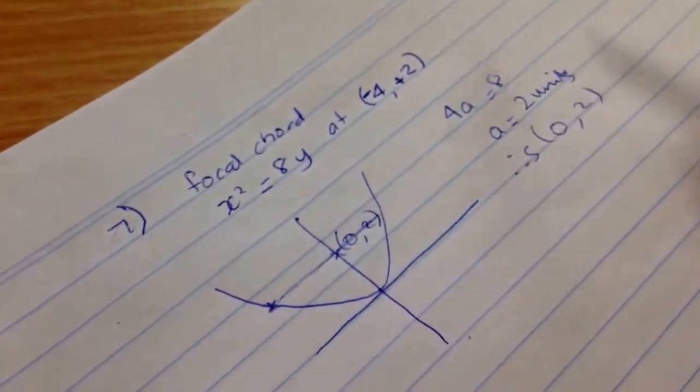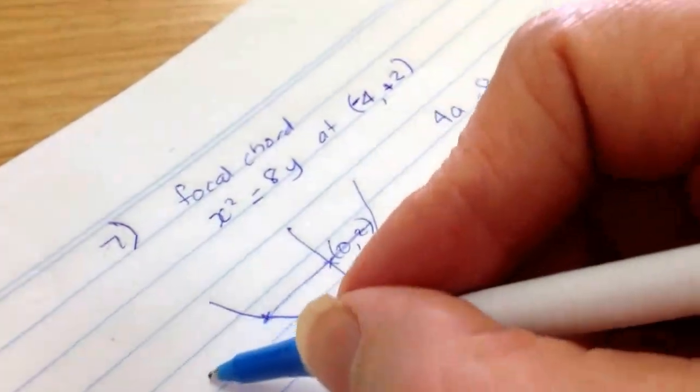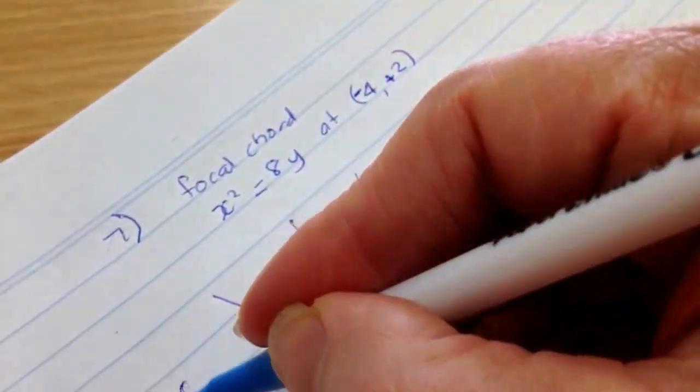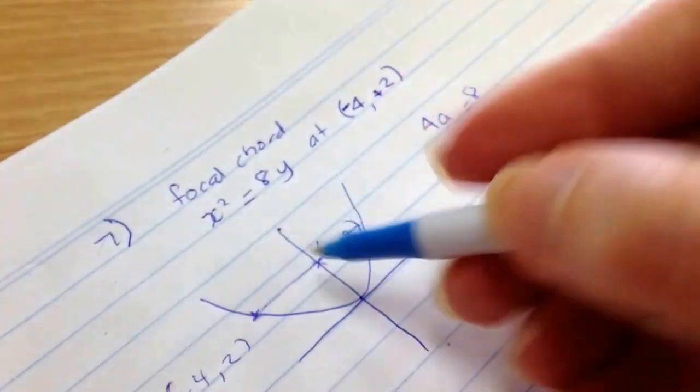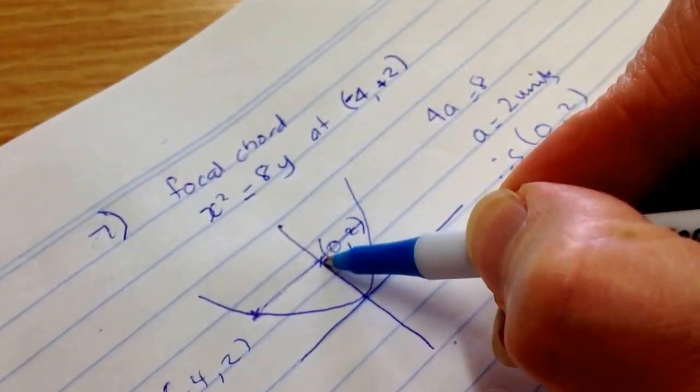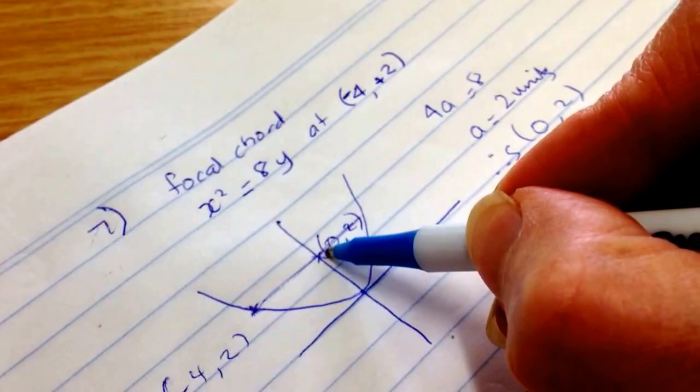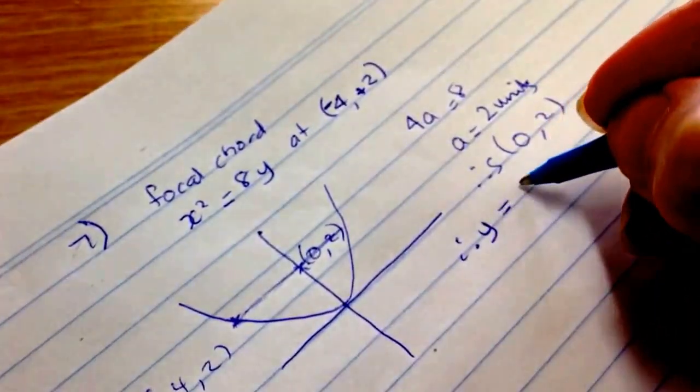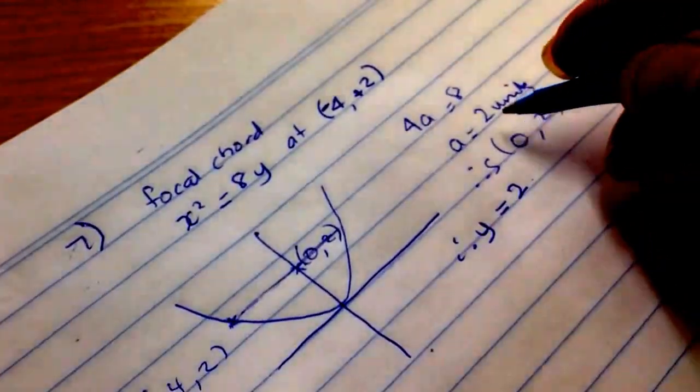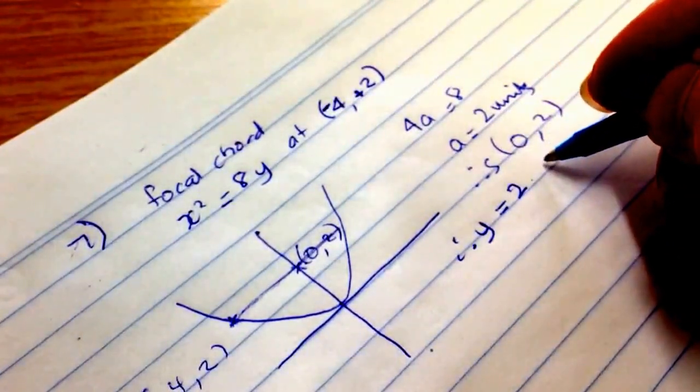It goes through the focus and it goes straight across because if this point is minus 4, 2, this point here is in line with this point here. What y value is it going through? It's going through 2. So therefore, the focal chord is y equals 2. That's the equation of the focal chord.